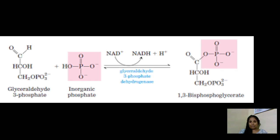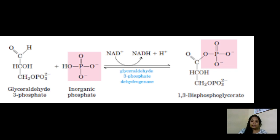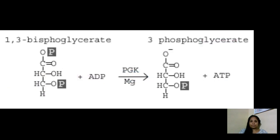In the next step, glyceraldehyde-3-phosphate is attached with an inorganic phosphate molecule to form 1,3-bisphosphoglycerate. This reaction is catalyzed by glyceraldehyde-3-phosphate dehydrogenase. Since this is a dehydrogenase reaction, hydrogen atoms are removed from glyceraldehyde, received by NAD⁺, resulting in the formation of NADH — the coenzyme NAD⁺ is reduced to NADH.